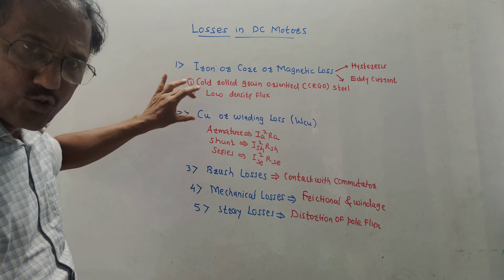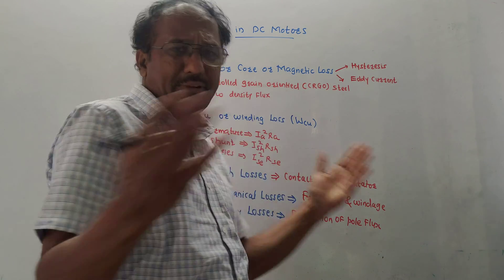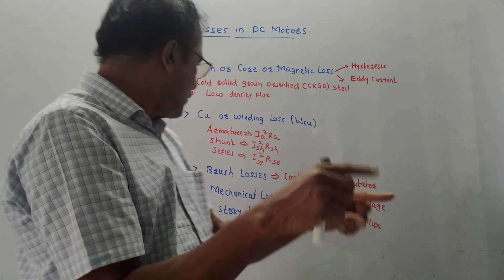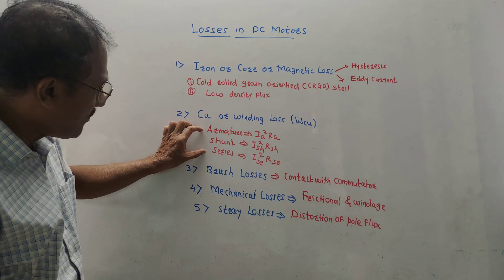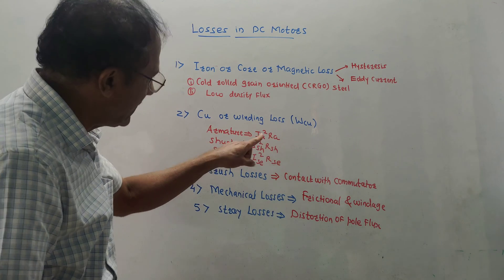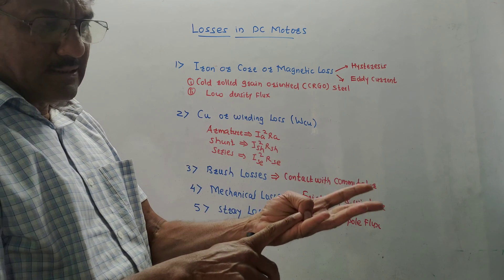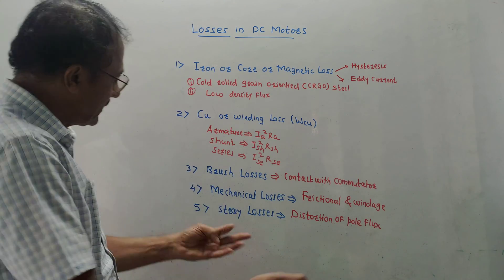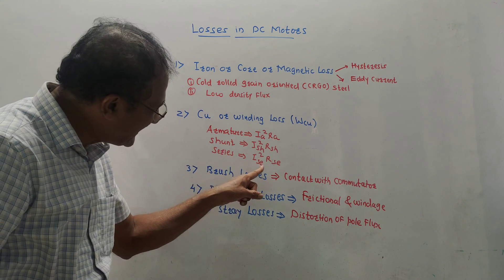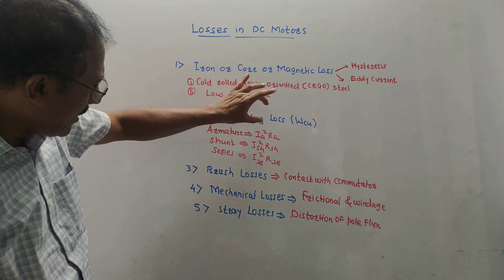Second type of loss is copper or winding loss. Basic equation of power is I²R. There are three types: armature loss is IA² × RA; for shunt DC motor it is ISH² × RSH; for series winding it is ISE² × RSE. This is the copper or winding loss.